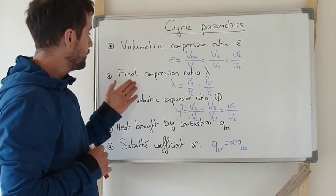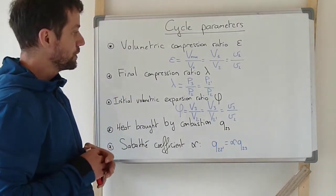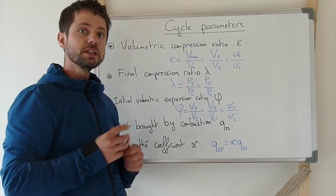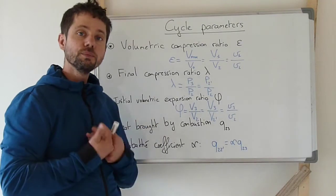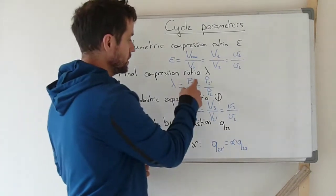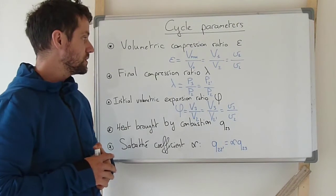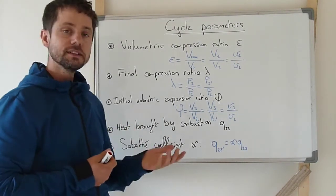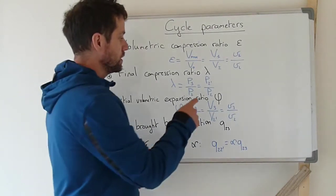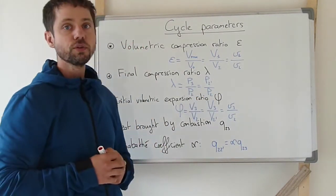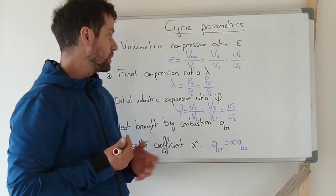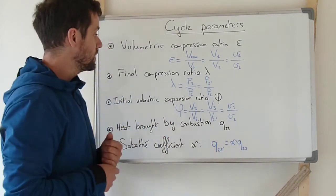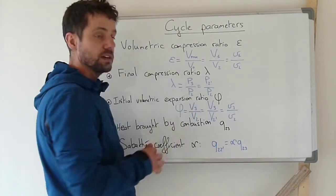Then, the final compression ratio, which is often written with the letter lambda (λ), corresponds to the ratio of pressure across the combustion, so P3 over P2. And because the second step is at constant pressure in a Sabaté cycle, then for the Sabaté cycle we can write P2 prime over P2. We can also note that this final compression ratio is equal to 1 in a diesel cycle because P3 will be equal to P2.